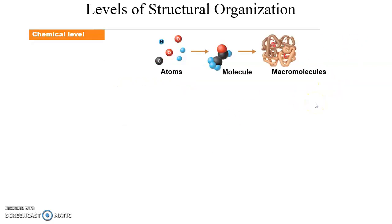We can look at the body on various structural levels because our body is organized all the way down to the chemical level. This includes individual atoms, the molecules formed from those atoms, and the very large macromolecules made up of thousands of atoms — including proteins, lipids, carbohydrates, and nucleic acids.